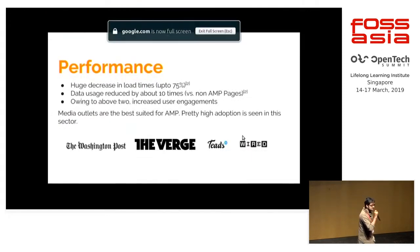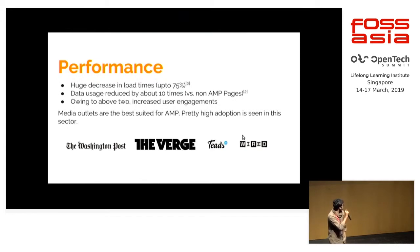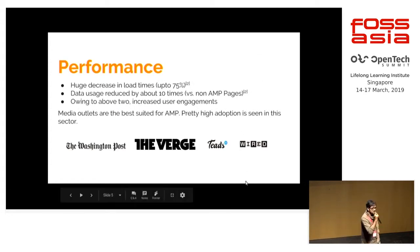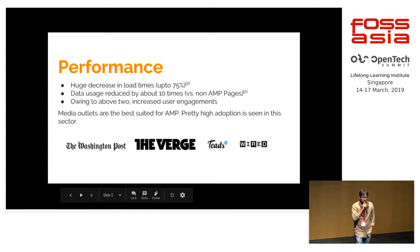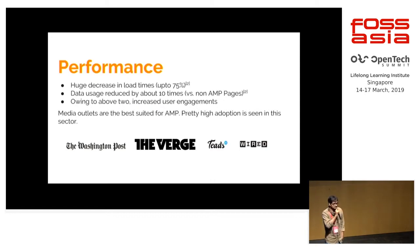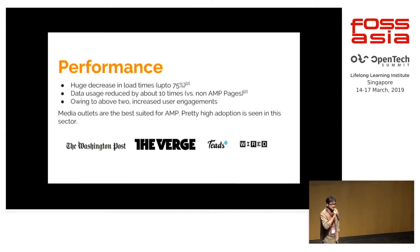AMP offers a tremendous increase in performance in terms of a huge decrease in load times, which is around 75% in some cases. Data usage is also reduced by 10 times. Owing to the above two, we'll definitely have increased user experience and engagement. The media outlets are going pretty high on AMP, and they have mostly adopted it because everybody wants to be at the better search results options.